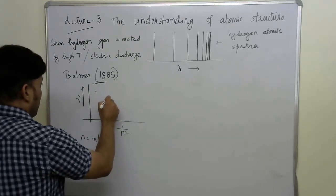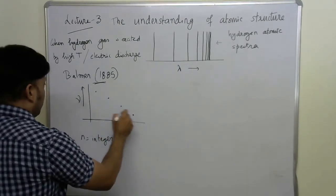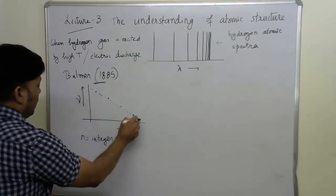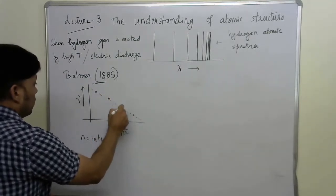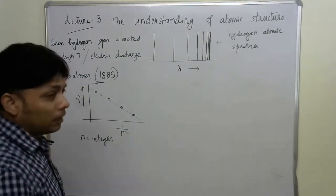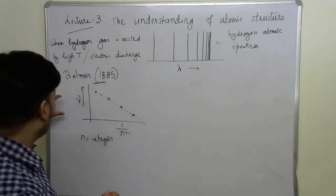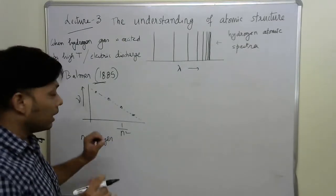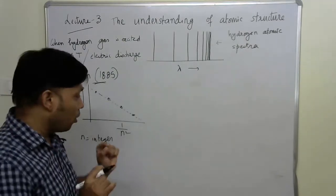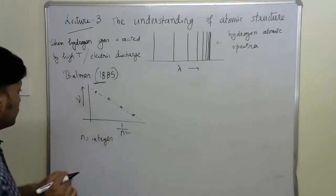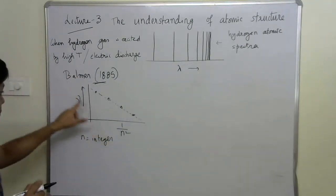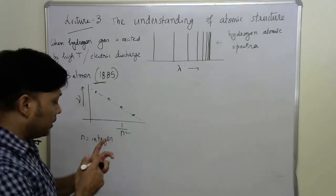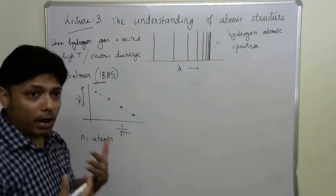And the relationship is something like this. The frequency of the emitted spectra would carry a linear relationship with 1 over n square, where n is an integer. You look here, already in this empirical relationship, the value n means the role of an integer becoming important in this observation. This relationship, the linear relationship of mu versus 1 over n square is completely empirical, found out by trial and error method.